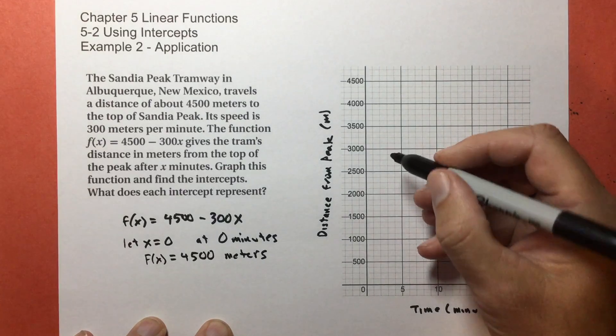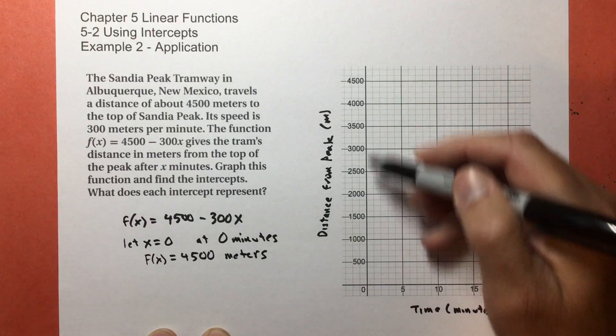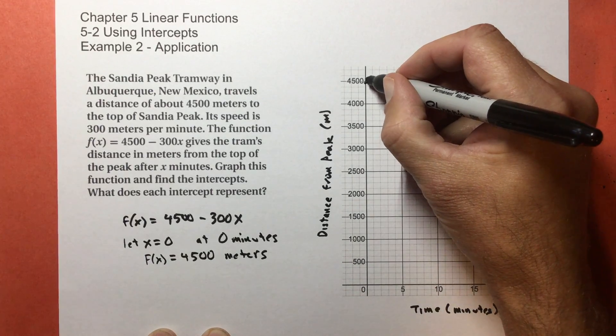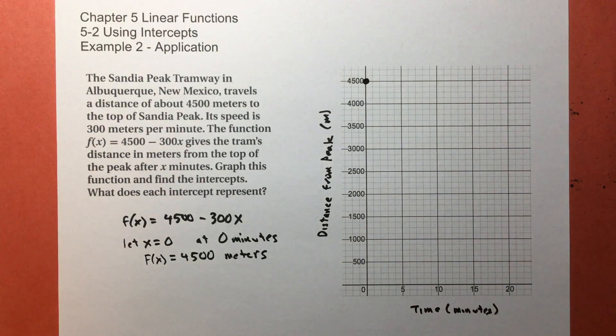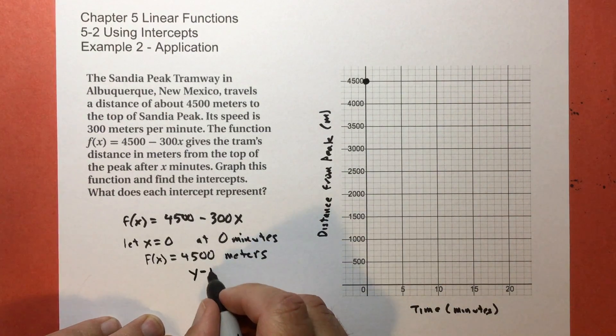So now let's graph that. 4500 at zero, so on my graph, I grabbed this, I adjusted it, and I stole this from Desmos. So at zero minutes, you are 4500 meters away. That is the y-intercept, by the way.